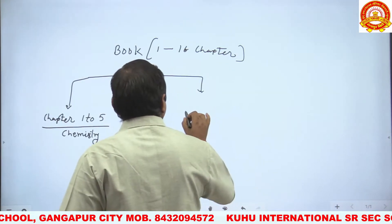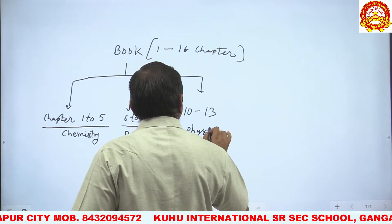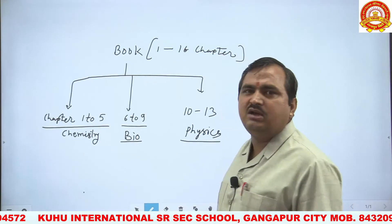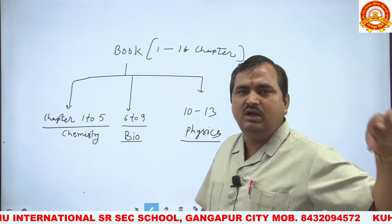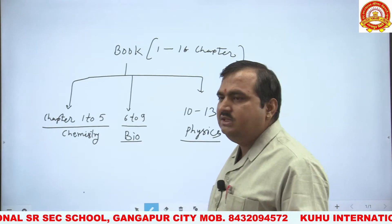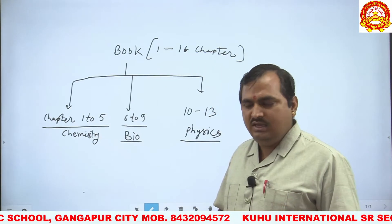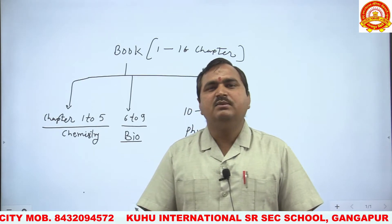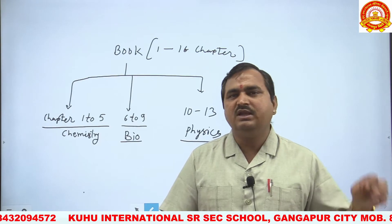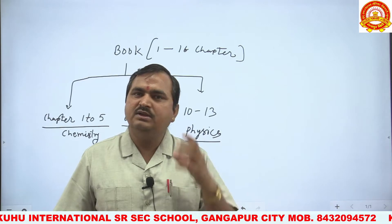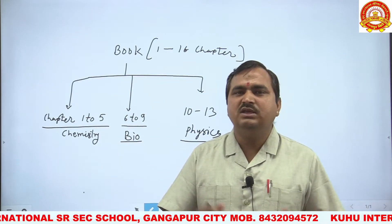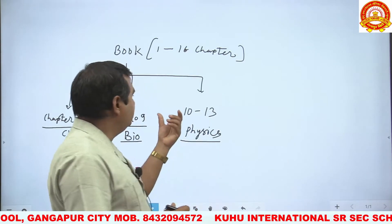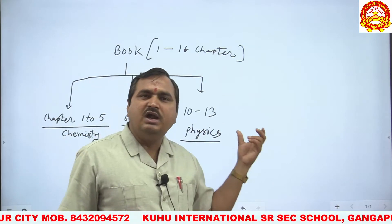Chapters 10 to 13 are Physics — 4 chapters of physics topics. Chapters 11 and 12 are also physics. Chapters 14, 15, and 16 cover the Environment. Biology is complete up to chapter 13. Chapters 14 to 16 are Environment.